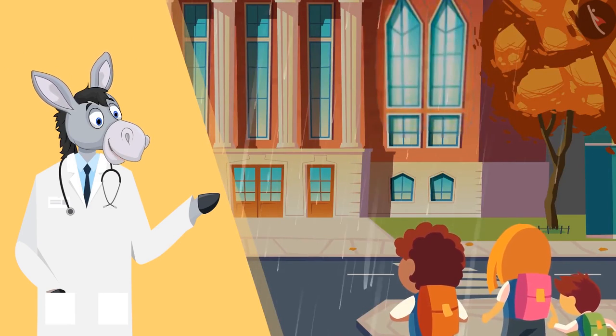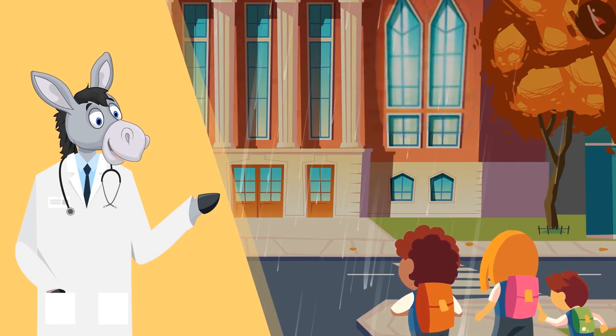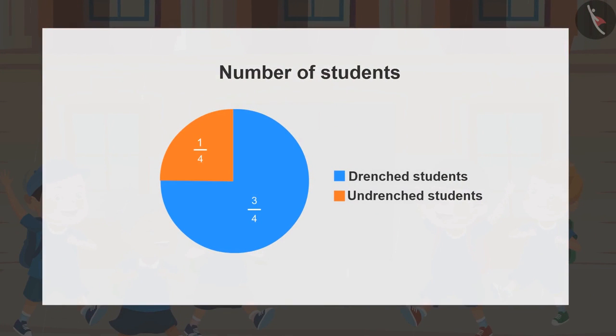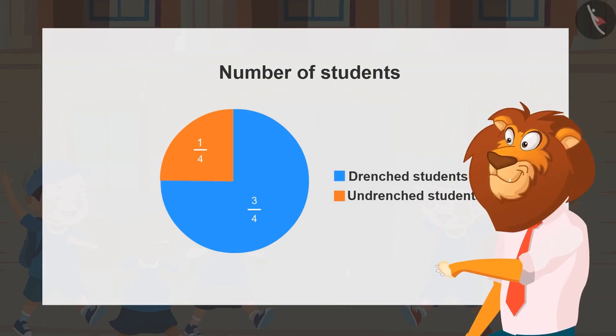Today, while coming to school, students got drenched in rain. Now, can you tell, has more than half of the students got drenched by the rain? Yes, more than half of the students got drenched in the rain, as three-fourth students got drenched.